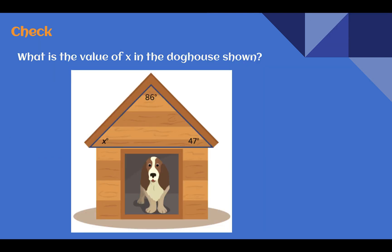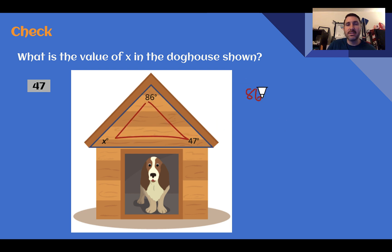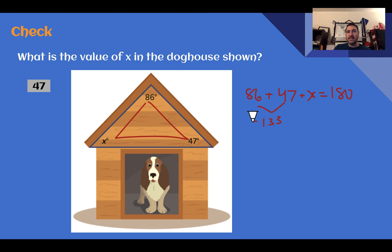Check your understanding: What is the value of X in the doghouse shown? Pause the video now and complete the check. You should have found that X was equal to 47. Let's verify: 86 plus 47 plus X added together equals 180. Combining 86 and 47 gives 133; subtracting from 180 leaves 47. So X is also 47 degrees.